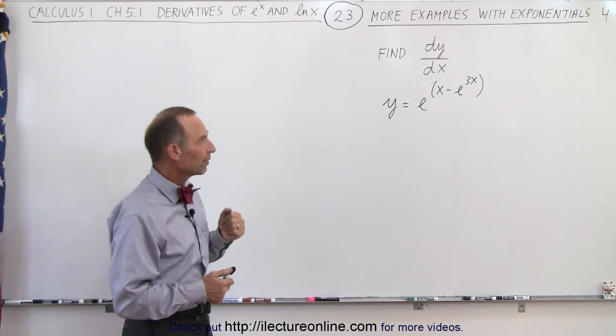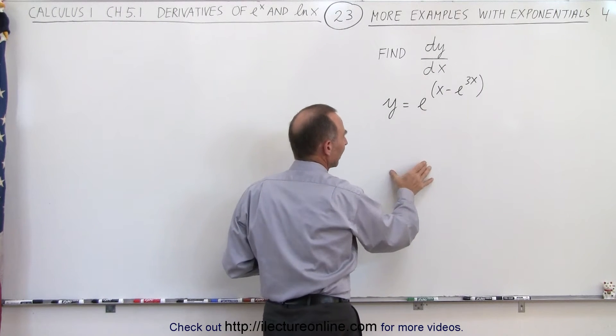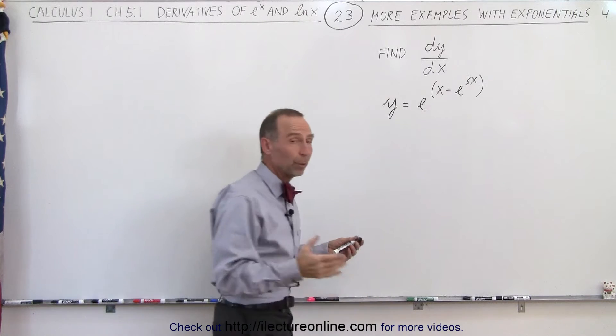So how do we take the derivative of this? Since it's an exponential function, we repeat the function and then we take the derivative of the exponent.